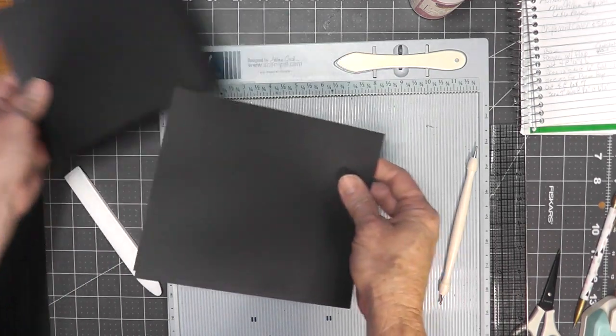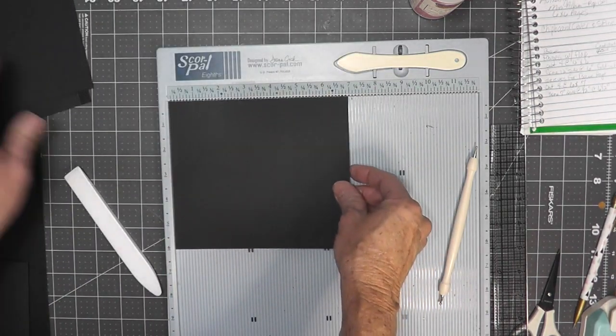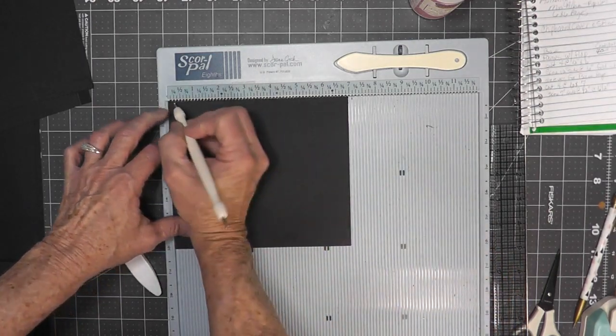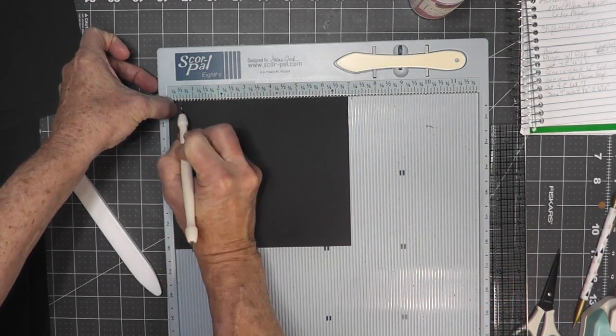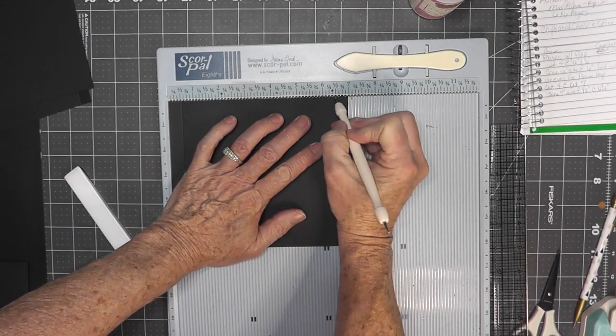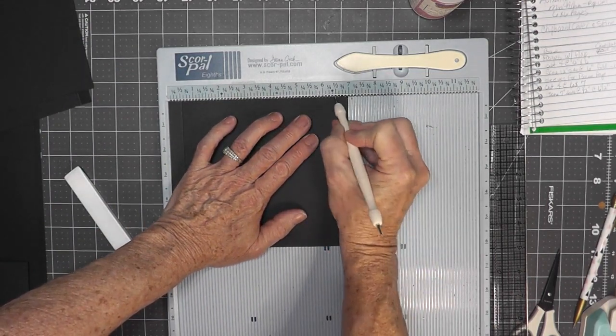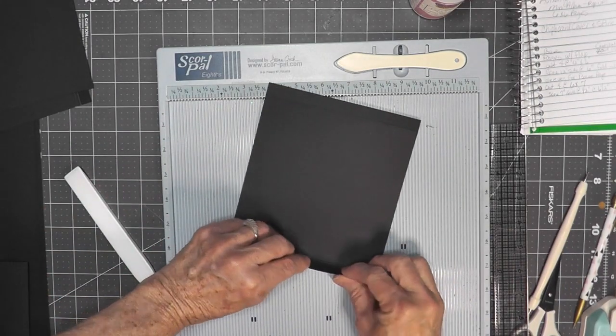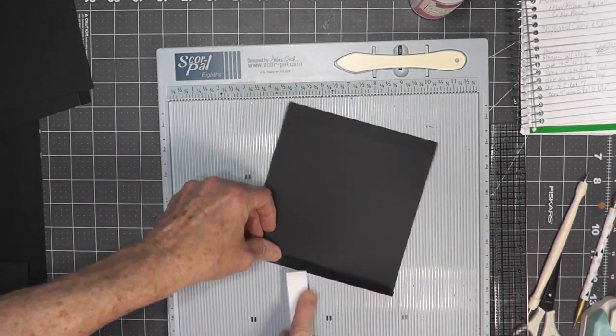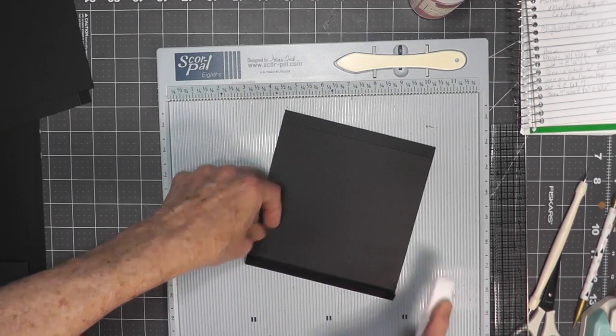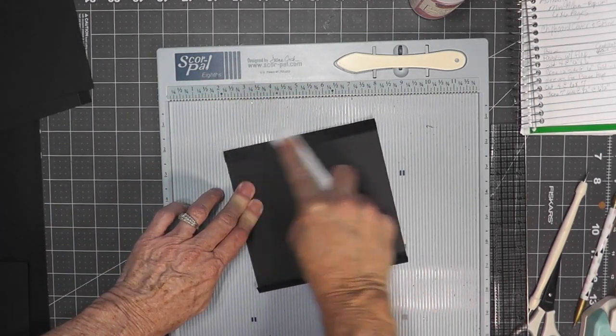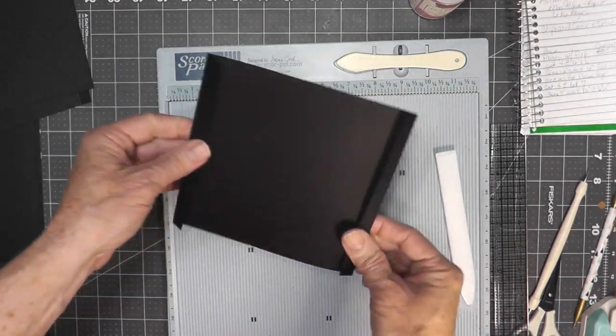Next to create the sleeves that will attach to the base pages, you should have four that are cut 6 inch by 7 inch. Put the 7 inch side into your scoreboard and score at a half inch and then at 6 and a half inch on all four pieces. Then go ahead and fold and burnish those fold lines toward each other. This does create the sleeves that will attach to each base page.